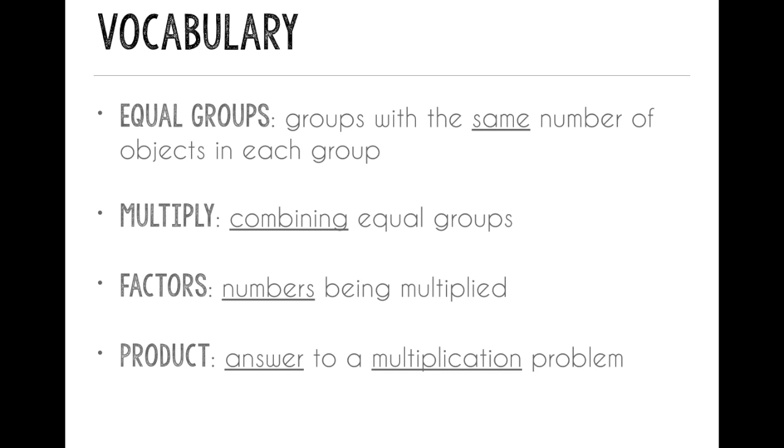Let's start with our vocabulary words. Our first word is equal groups, and this means groups with the same number of objects in each group. Our next word is multiply. Multiply means you are combining equal groups, putting them together. Factors are the numbers being multiplied. That would be our number of groups and then the number in each group. And the total is our product. That's the answer to a multiplication problem.